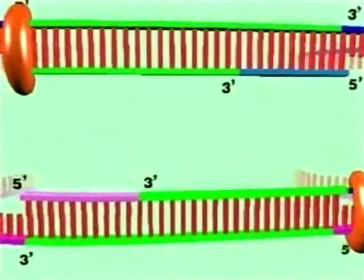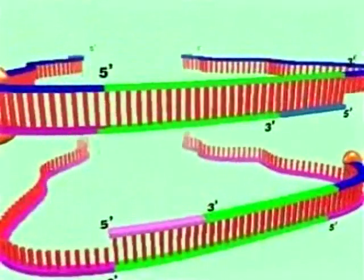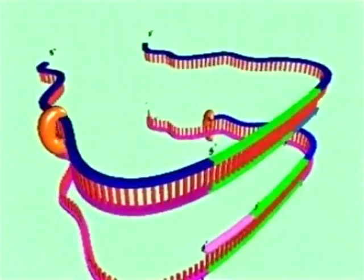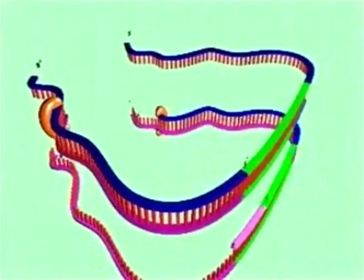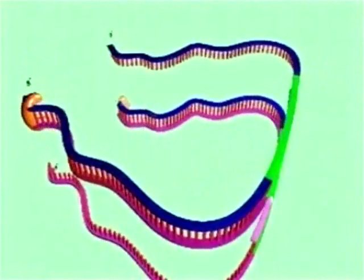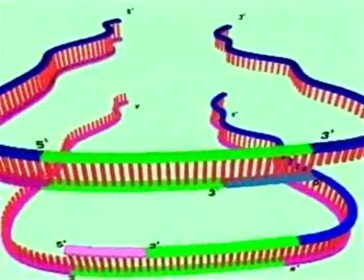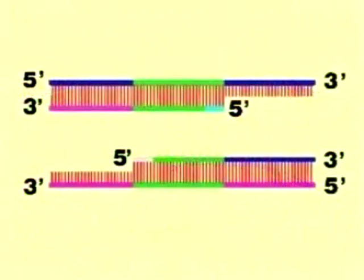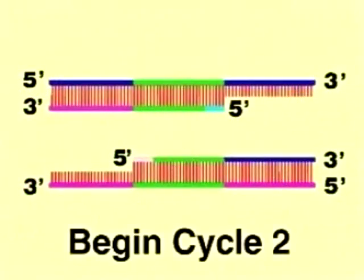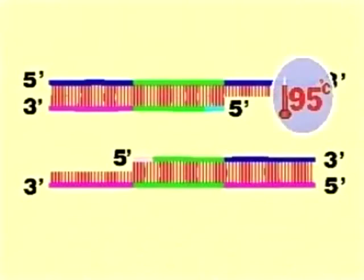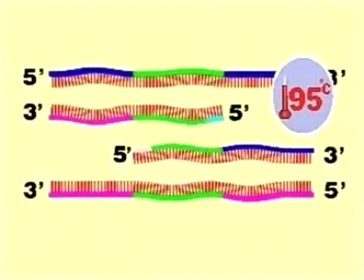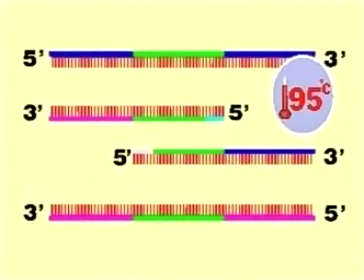In the entire mixture of genomic DNA molecules, only the DNA containing the target sequence is copied, as Taq polymerase can only copy a molecule that has a primer attached. Thus, the two strands are synthesized completely. At the end of cycle 1, the two strands are completely copied to partially form a double-stranded DNA molecule. In the next cycle, the same procedure is repeated.